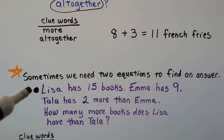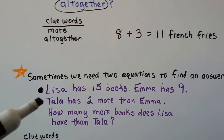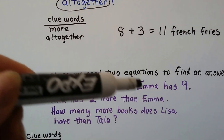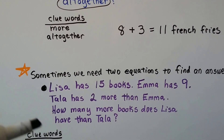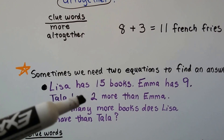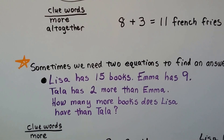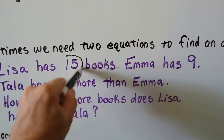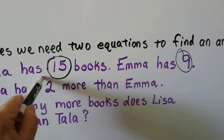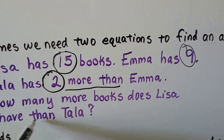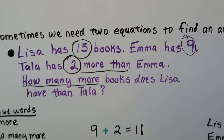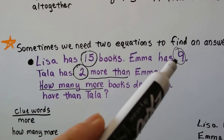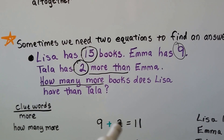Lisa has 15 books, Emma has 9 books, and Tala has 2 more books than Emma. So how many more books does Lisa have than Tala? We have three people: Lisa, Emma, and Tala. Our clue words are 'more' and 'how many more,' and our important numbers are 15, 9, and 2. The first thing we need to do is find out how many books Tala has: 9 plus 2 equals 11.